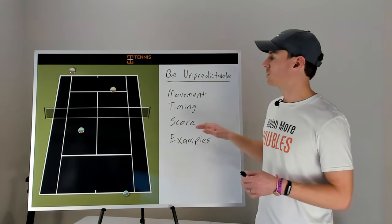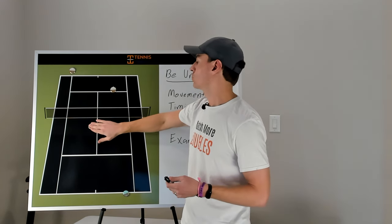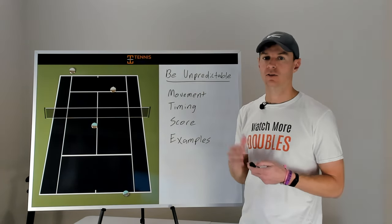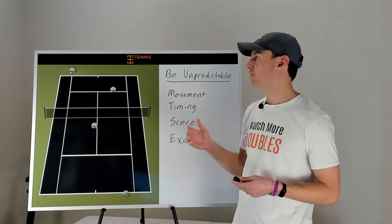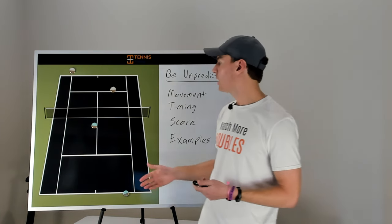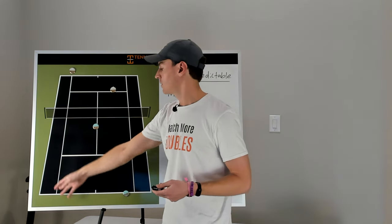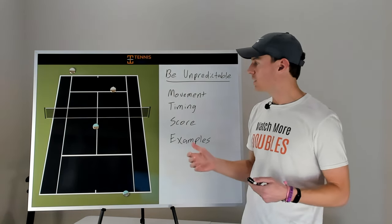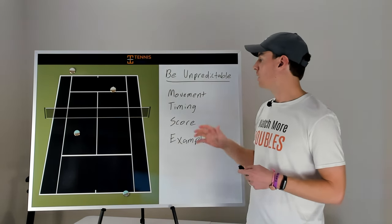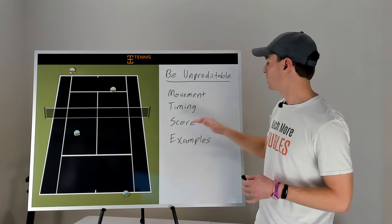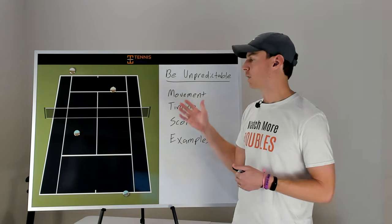The last thing to consider when being unpredictable is the score. An early poach might not be a great idea if you're down 15-40 serving with double break point or set point. But if you're up 40-15 in the game, it might be worth the risk to see if they can make that down-the-line shot — and if they do, you're still up 40-30, so no harm done. Keeping the score in mind while staying unpredictable is going to help you become a more effective net player.